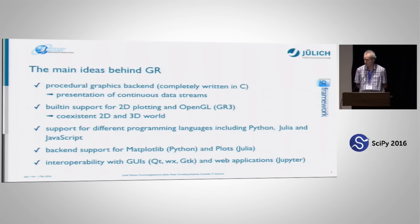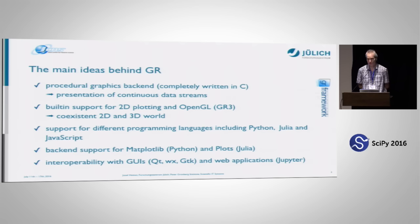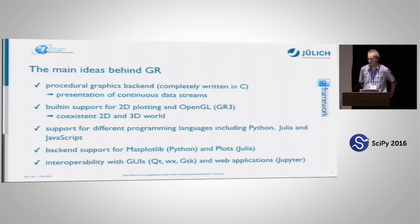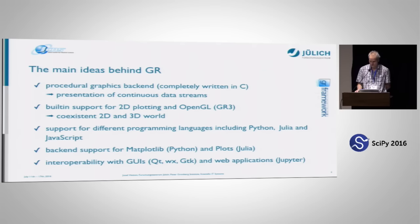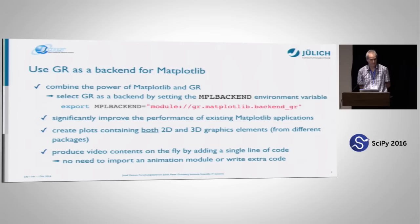We have several backends for other bigger software packages. For example, you can use the GR framework as a backend for Matplotlib, which makes Matplotlib much faster, or for Plots, which is the main plotting system for the Julia language. We also provide interoperability with several graphical user interfaces such as Qt4, Qt5 (currently work in progress), WX Widgets, and GTK. We can also use our software in web applications like Jupyter, and I have several demos demonstrating this later.